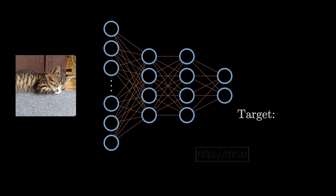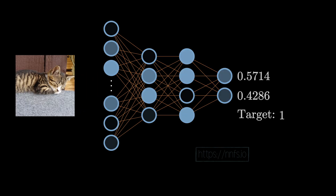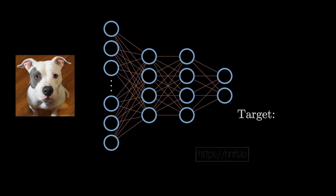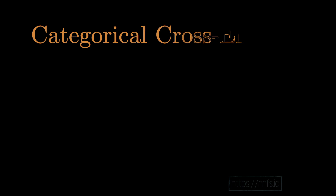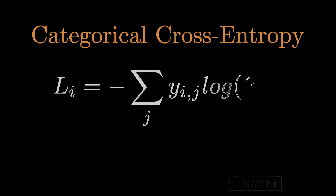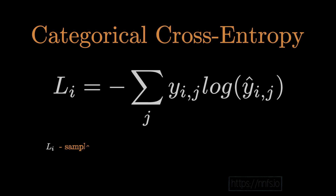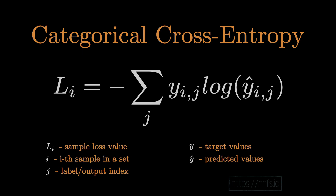From the distribution we also know from the training data what the intended target value was, and from there we want to determine how wrong the model is. There are many ways to do this, but the loss function of choice for classification using softmax on the output layer is categorical cross entropy. The formula takes the negative sum — and what we're passing through for categorical cross entropy is two probability distributions.